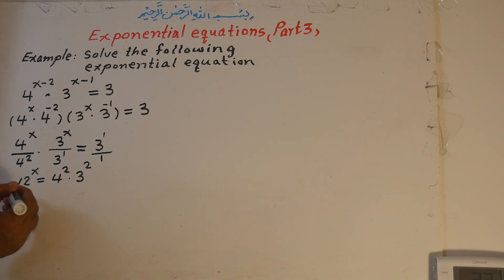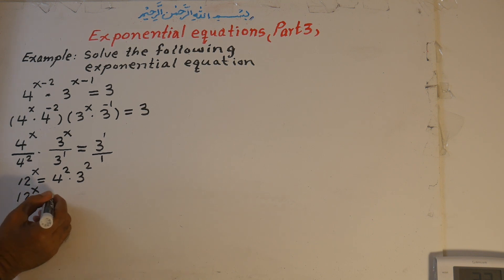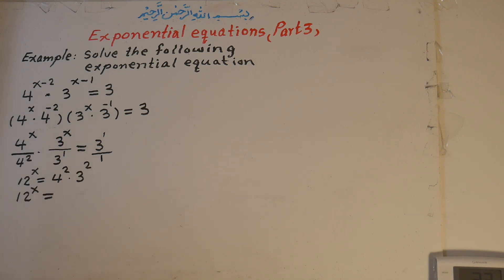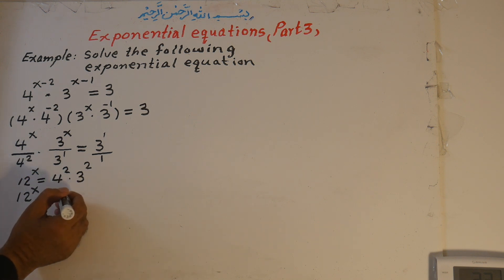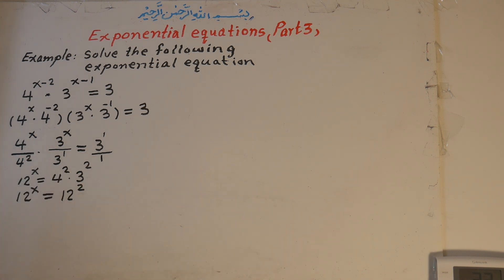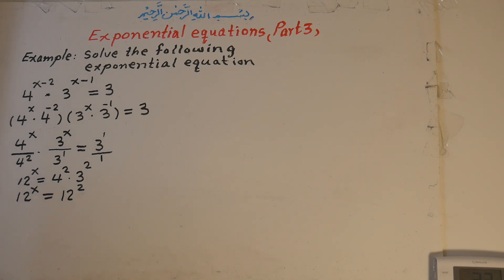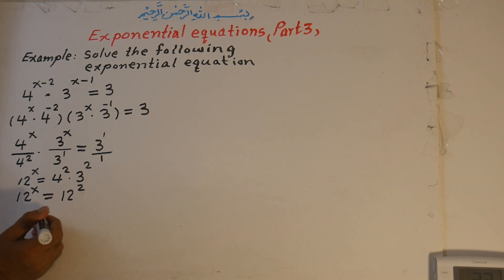Now from here, because both bases are the same and both exponents are 2, we can multiply: 4 times 3 equals 12 to the power of 2. The condition is that we should equalize the exponents to each other only if the bases are equal. Because both bases are 12, we can set the exponents equal: x is equal to 2.